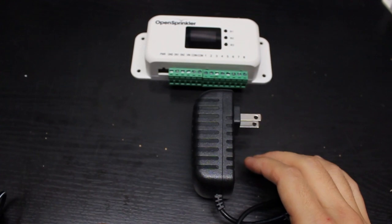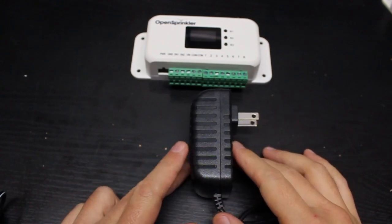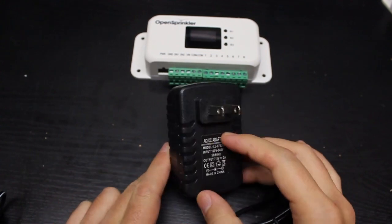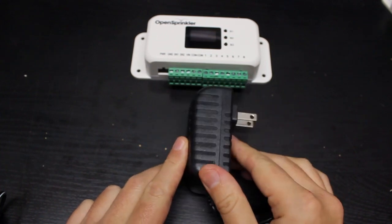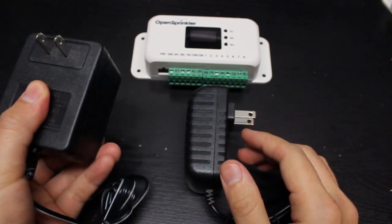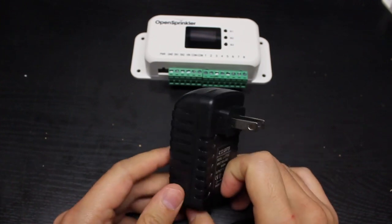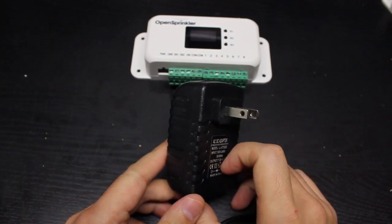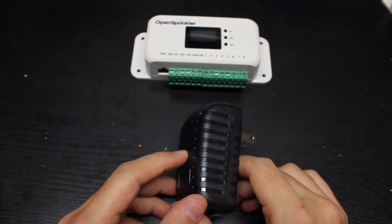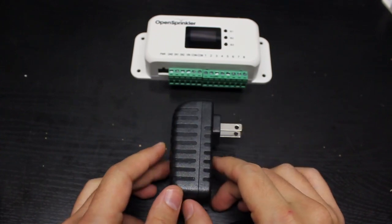On the other hand, the DC powered version is more flexible because its power adapter is much smaller and lighter compared to the 24 volt AC power adapter. Also the DC adapter is easier to find for international customers. It can also be powered by solar if you want to go off grid.